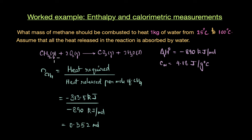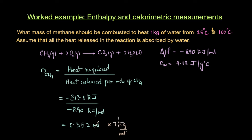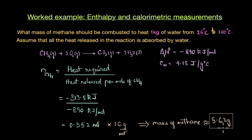That gives us 0.352 moles of methane that need to be combusted. But the question asks for the mass of methane, not the number of moles. So we simply multiply by the molar mass of methane, and we get the final answer of approximately 5.63 grams. That means approximately 5.63 grams of methane should be combusted to heat 1 kg of water from 25°C to 100°C.